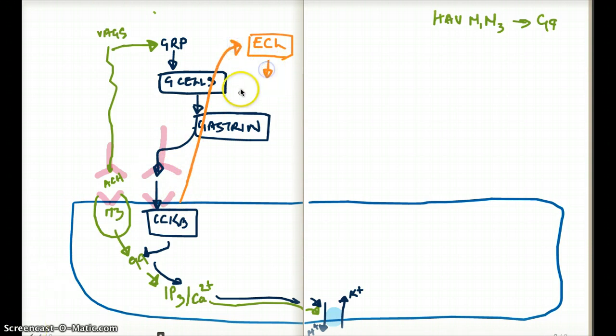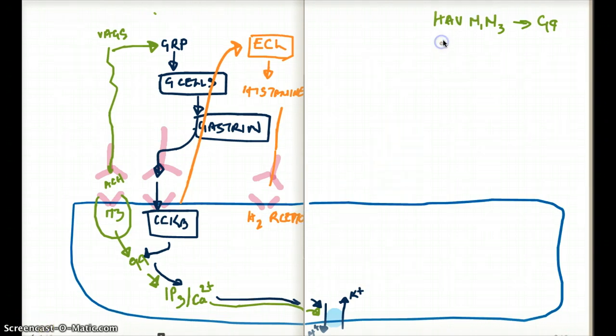Enterochromaffin-like cell is going to release histamine. Now histamine is going to go and bind to a receptor here. It's going to stimulate the H2 receptor. When it binds to the H2 receptor, H2 is part of the GS pathway. The GS pathway is beta 1, beta 2, delta 1, H2, V2.